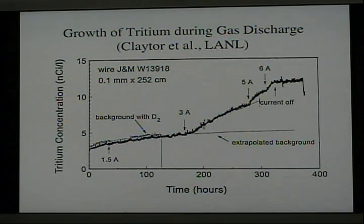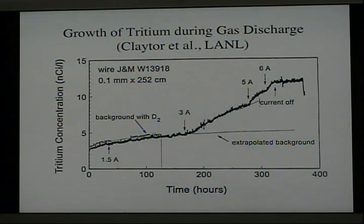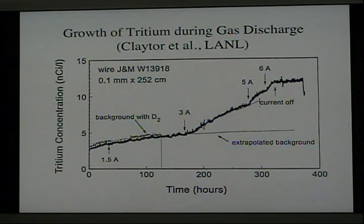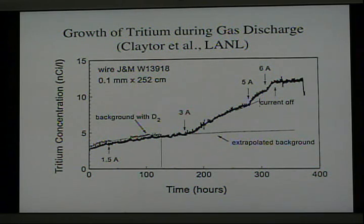Tritium can also be made by gas discharge. In this study, Tom Claytor at the Los Alamos National Laboratory caused a discharge to form between two palladium electrodes in deuterium. The gas was circulated within the apparatus, and the tritium was detected using a device sensitive to the beta decay current. This technique was checked against the more conventional method by converting the deuterium to heavy water and placing it in a scintillation detector. The two gave exactly the same values for tritium, confirming that these measurements are accurate.